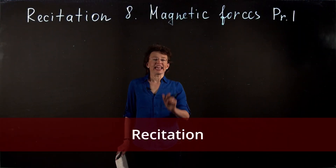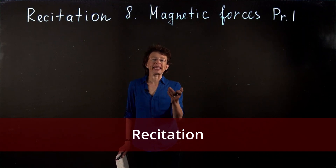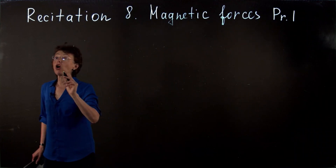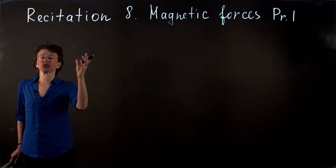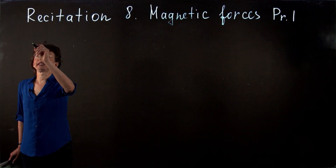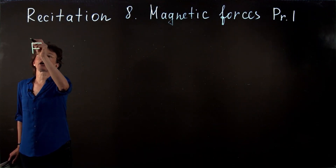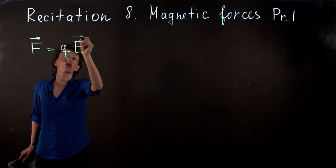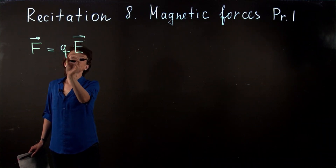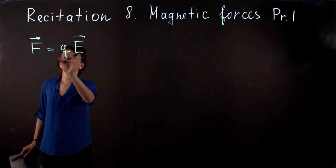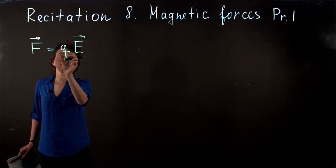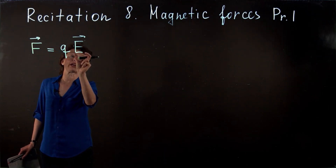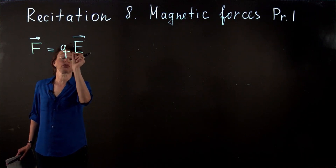This is recitation 8, and today we introduce the magnetic field and we will work with magnetic forces. We already know that if we have an electric field created in some region of space and we place a charged particle in it, there will be a force qE exerted on that particle — in the same direction as the electric field if the particle is positively charged, and in the opposite direction if q is negative.